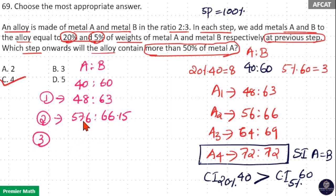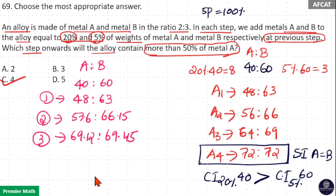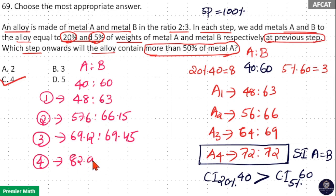In the third step, 20% of 57.6 is added to 57.6, giving A=69.12, and B becomes 69.45. In the fourth step, 20% of 69.12 is added to 69.12, giving A=82.94, and B becomes 72.9. You can see that in the fourth step A is greater than B. So option C is your answer.